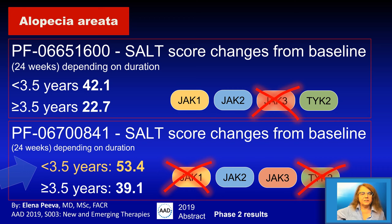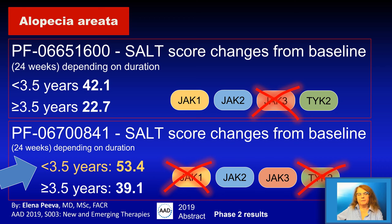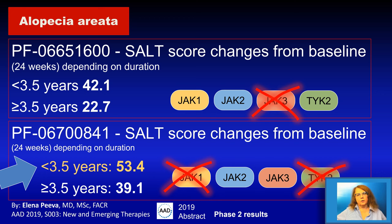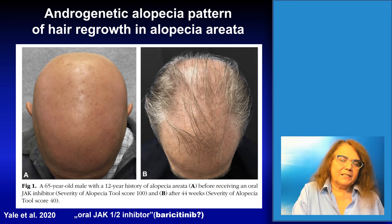There are more ongoing trials with alopecia areata and JAK inhibitors. Two new JAK inhibitors are being studied: one is mainly a JAK3 inhibitor and the other inhibits JAK1 and TYK2. Both have shown efficacy, however the JAK1 and TYK2 inhibitor is more effective, with 53% of patients achieving a SALT score change from baseline of 50% or more. Interestingly, patients with a disease history of three and a half years or shorter had a better response compared to those with a longer history.